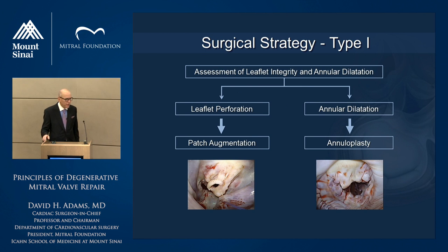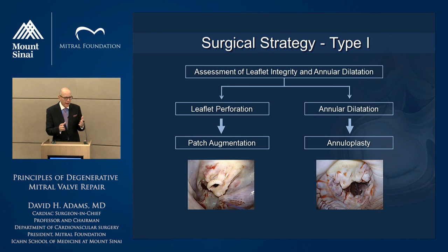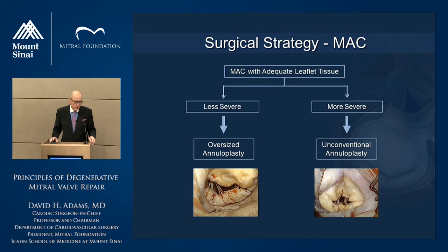Surgical strategy for type 1 involves looking at leaflet integrity and annular dilatation. Perforations are typically treated with patch augmentation. Annular dilatation is primarily treated by annuloplasty. Patch augmentation is also very useful in patients with small valves and annular calcification, where you can't close clefts because of the calcium — we usually do something called a patch overlay. We're currently using decellularized pericardium, though we've used glutaraldehyde-fixed pericardium mostly. In the re-op setting, we always use decellularized pericardium now.